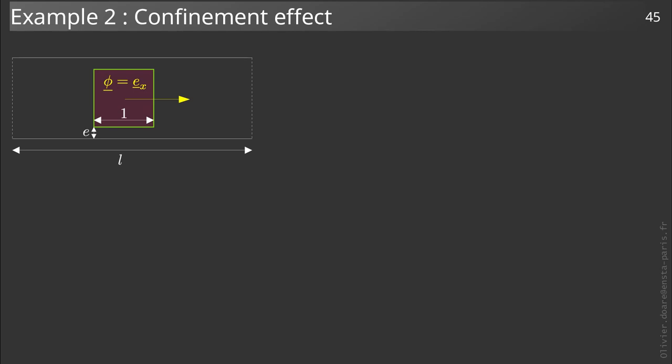In this second example, we will both highlight the confinement effect and present some examples of numerical resolution. It is a square oscillating horizontally in a rectangular cavity. With the chosen scaling, the square is of side 1, the gap between the square and the cavity small e, and the large dimension of the rectangle small l. We take l sufficiently large so that the walls here in dotted line do not influence the result of our calculation.